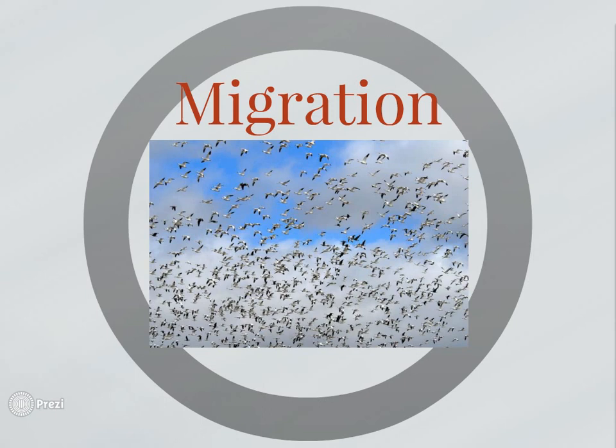Another thing that made England perfect for the Industrial Revolution is that even though it's a small island, it had some extremely valuable natural resources. Here's a lump of coal — coal was one thing England had in abundance. And there's another mineral called iron ore. When you mix coal and iron ore together, you get steel. Coal can also obviously be burned for energy purposes, which it was. So this is very significant.